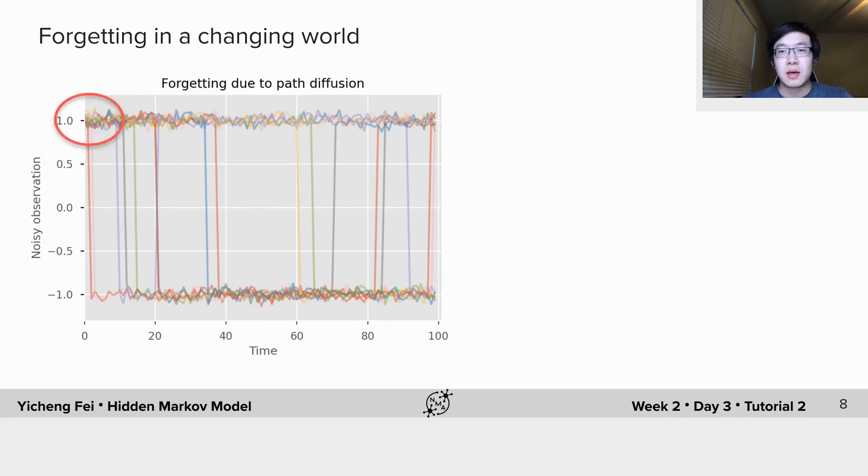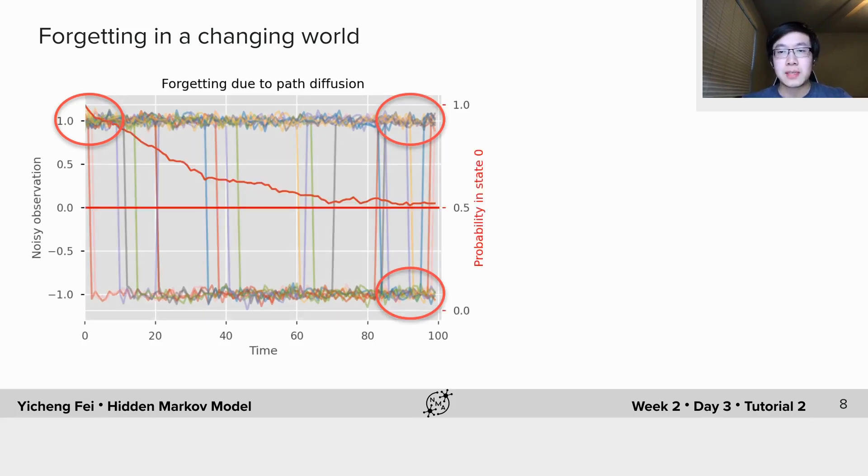As you can see, in the first few steps we are still pretty sure we will stay in state 0. But as time goes, we will be more and more uncertain which state we are in. Actually, the probability of being in state 0 decays exponentially from 1 to 0.5 over time.